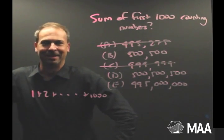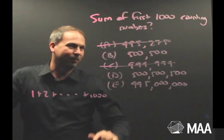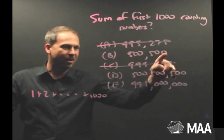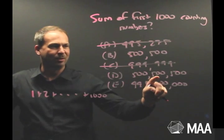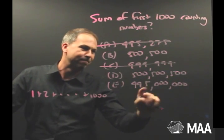All right. Can I eliminate any other choices here? Well, I've got what? 500,500, 500 million, 500,500 and 495 million.